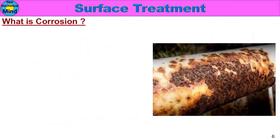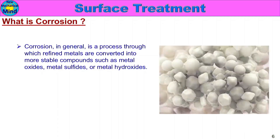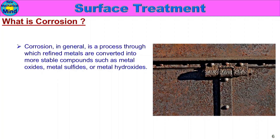Now, what is corrosion? Corrosion is a process through which refined metals are converted into more stable compounds such as metal oxides, metal sulfides, or metal hydroxides. In terms of refined metals — for example in industrial use — it is a refinery process that converts and supplies the material back to its original stable compound position.